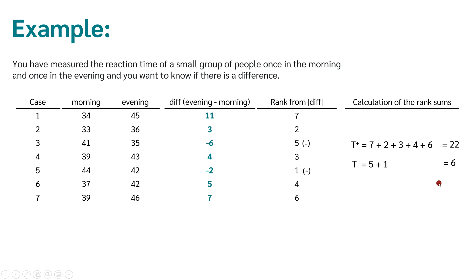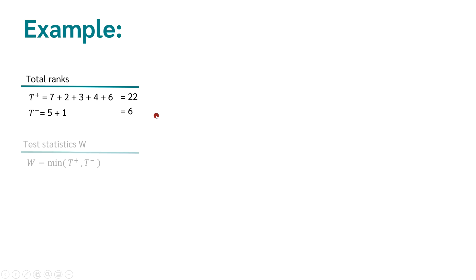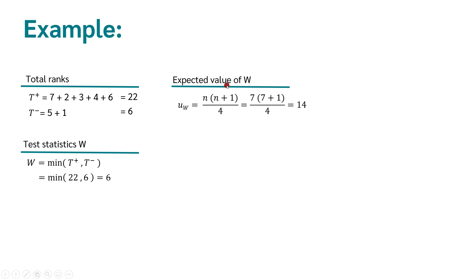If there is no difference between morning and evening, the positive and negative ranks should be approximately equal. Therefore, the null hypothesis is that both rank sums are equal. Now we use the sum of ranks to calculate the test statistic W. This is simply the minimum value of T-plus and T-minus. In our case, it is the minimum of 22 and 6, so the test statistic W is 6. We can also calculate the value for W we would expect if there was no difference — in this case, we would get a value of 14. So if there is no difference, we would expect T-plus and T-minus both to be 14, and thus W would also be 14.